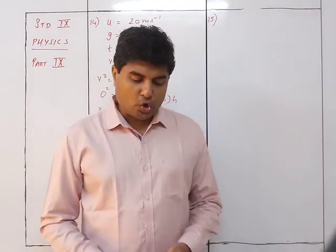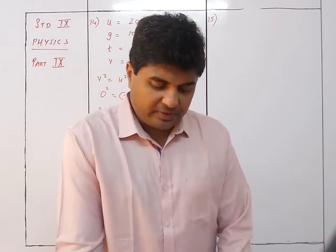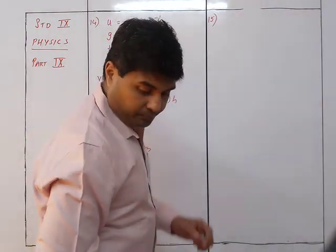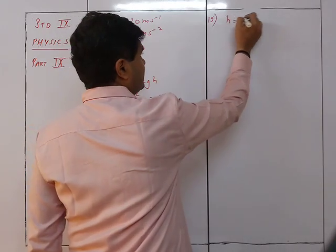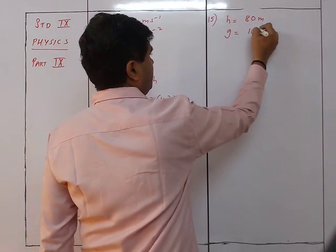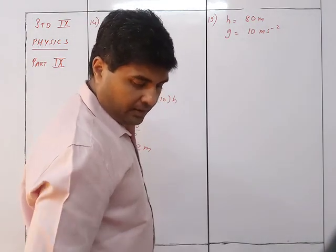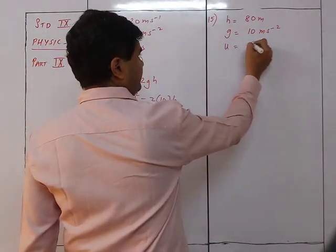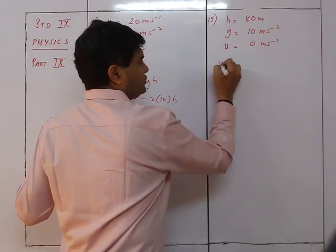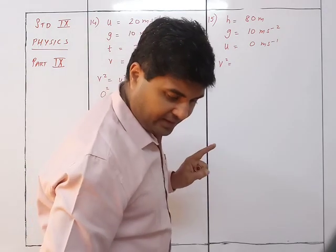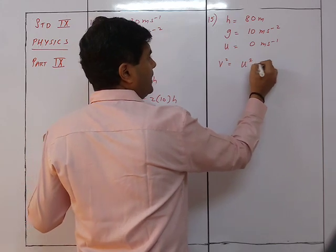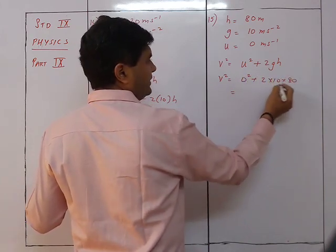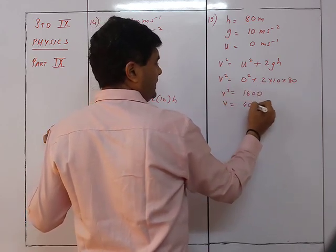Question 15: How long will a stone take to fall to the ground from the top of a building 80 meters high, and what will be its velocity on reaching the ground? Given h = 80 m, g = 10 m/s². Since dropped, u = 0. Using v² = u² + 2gh: v² = 0 + 2 × 10 × 80 = 1600, so v = 40 m/s.